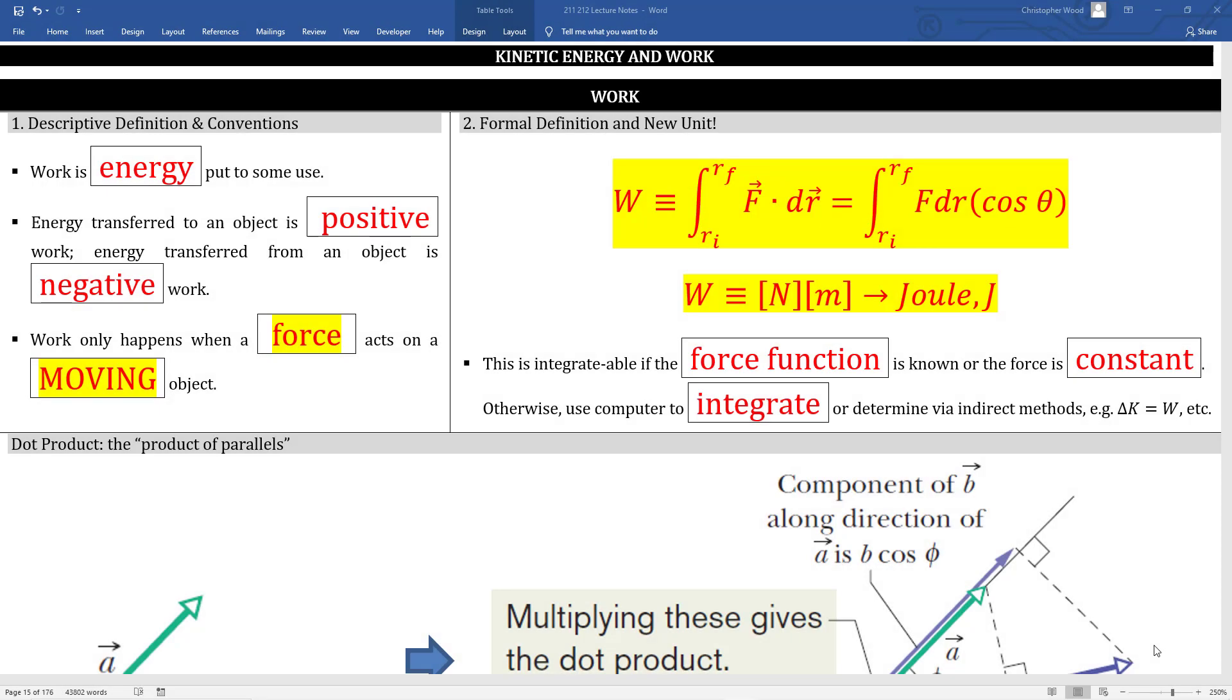Chapter 7, Kinetic Energy and Work. Work is energy put to some use. Energy transferred to an object is positive work. Energy transferred from an object is negative work.